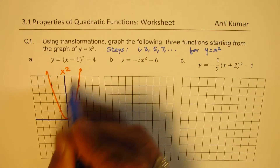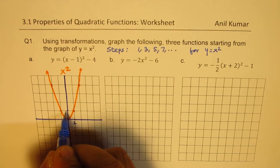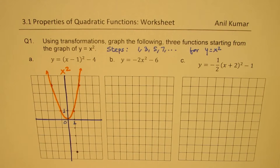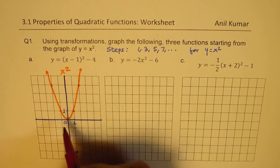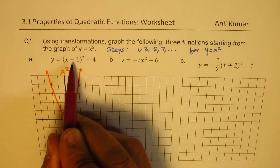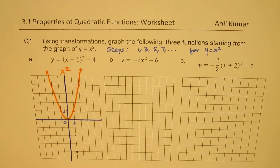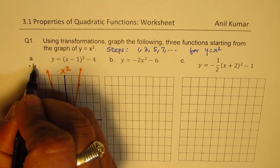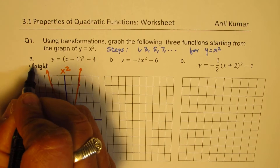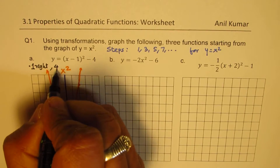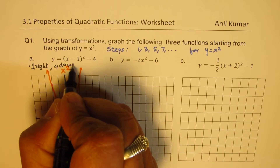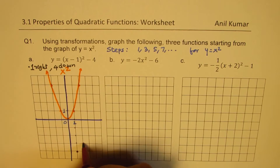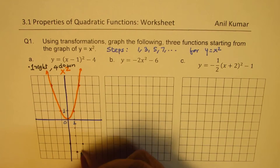Each unit is one unit for us. Every point is translated 1 unit right and 4 down. The translation is 1 right and 4 down. So if I do that, I get the translated graph right there.